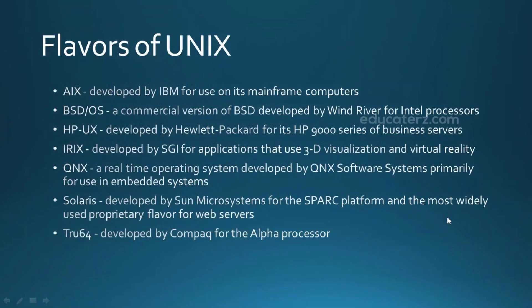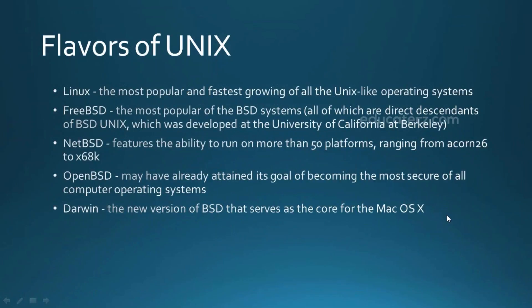We also have free versions of UNIX, called UNIX-like operating systems. These are almost similar to UNIX in all the features they offer — almost all the commands are the same. They support a multi-user and multitasking environment and also support networking, and are just as reliable as UNIX. Linux is very famous among these — it is the most popular and fastest-growing UNIX-like operating system, with different flavors like CentOS and Ubuntu, which is popular for desktop applications.